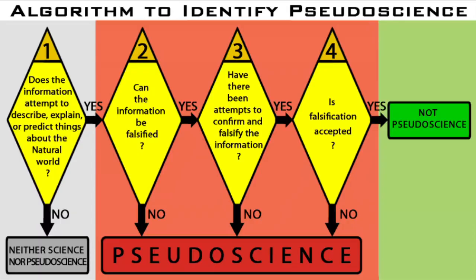How to identify pseudoscience using objective criteria. This video presents a straightforward algorithm that can be used to identify pseudoscience by asking four simple questions.